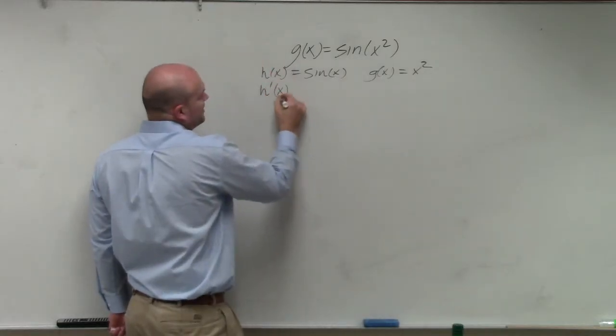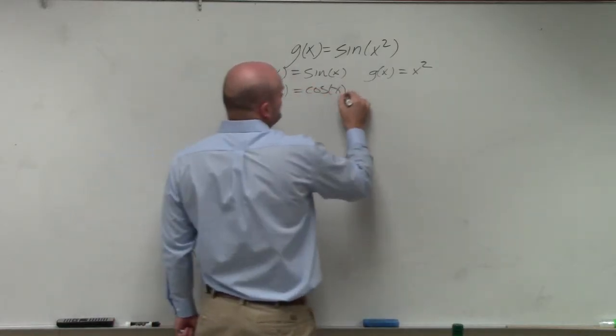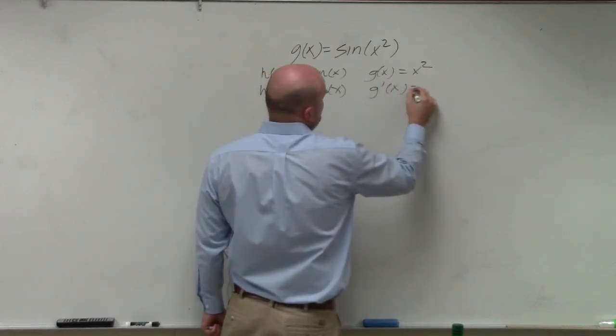So again, we'll just go ahead and find these derivatives. That's going to be cosine of x, and g prime of x is equal to 2x.